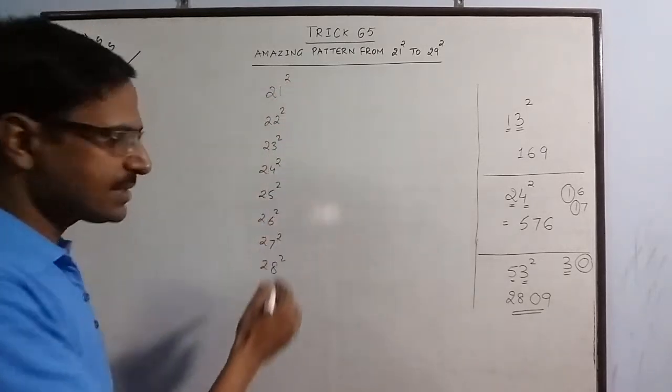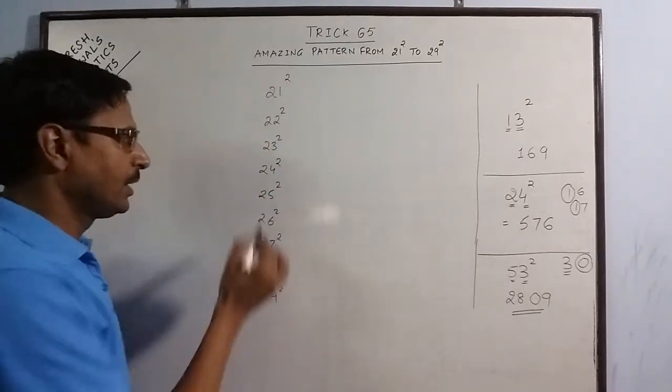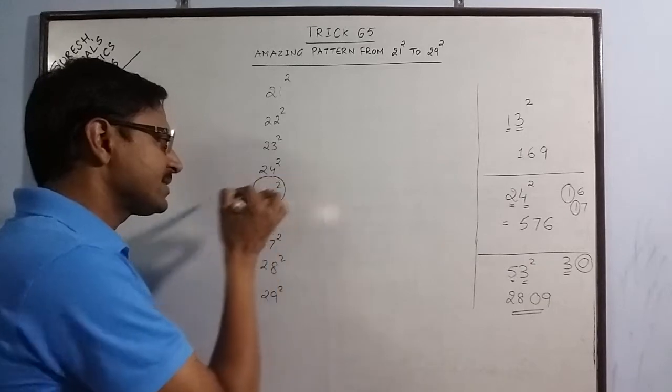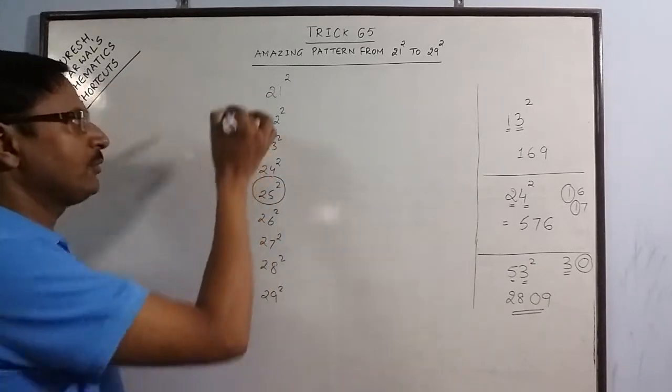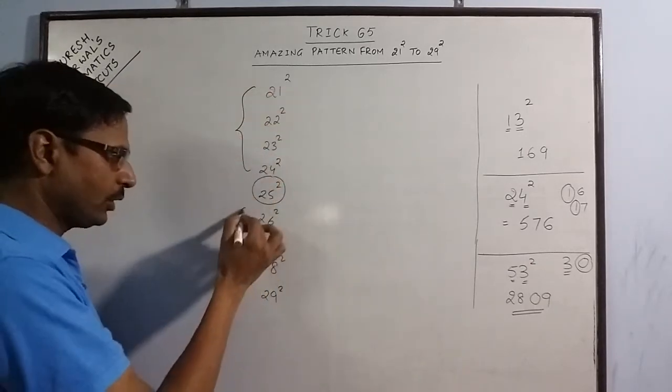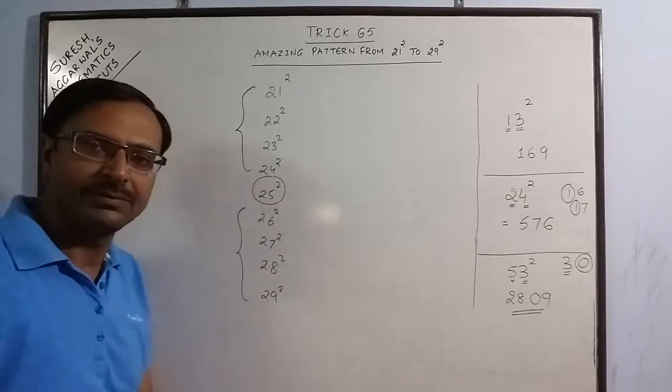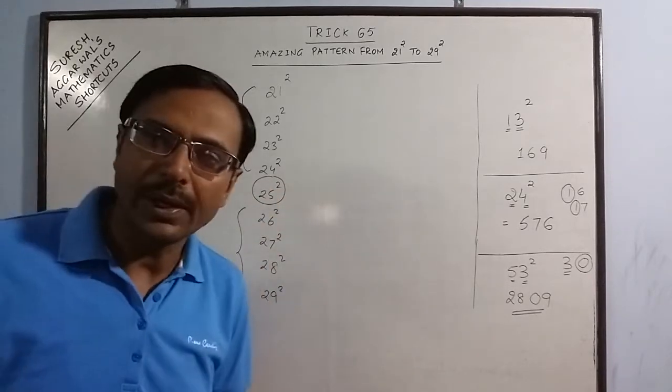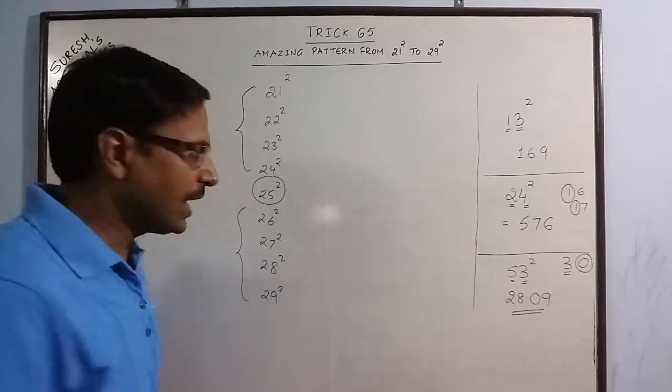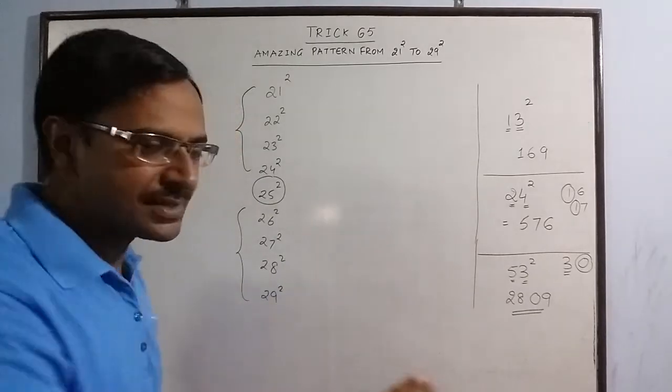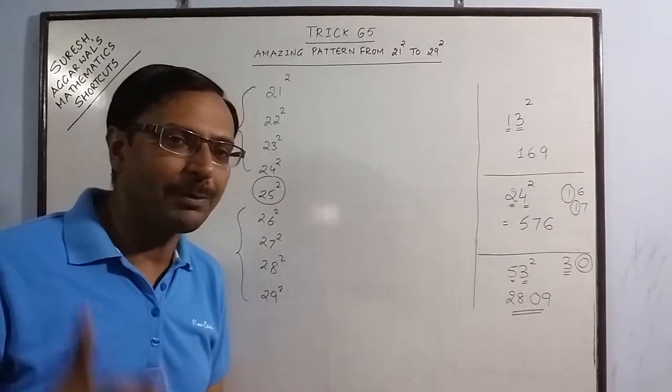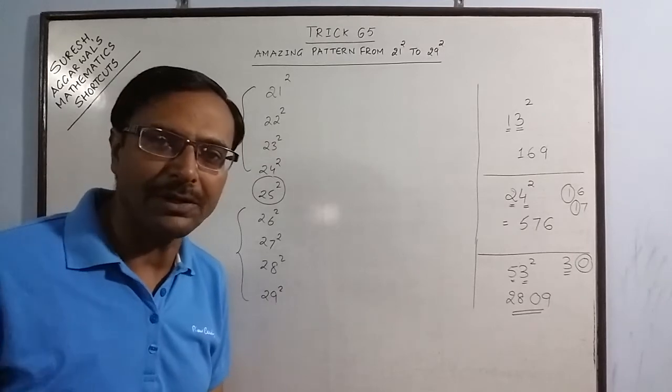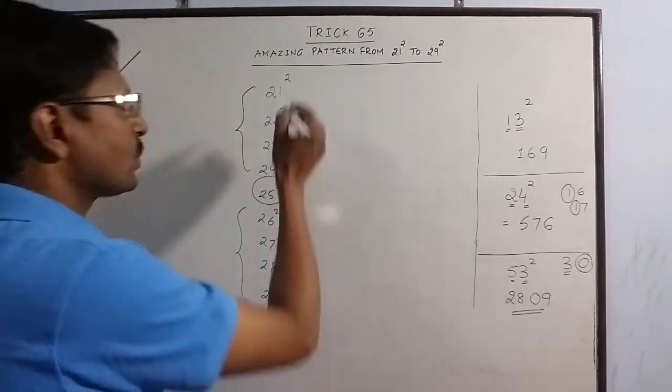Now among these 9 numbers 25 square exists in the middle. We have 4 numbers here and 4 numbers below 25. If we can square the first 4 then the last 4 are self explanatory if you know a particular pattern, a very exact pattern. Now let us square this.